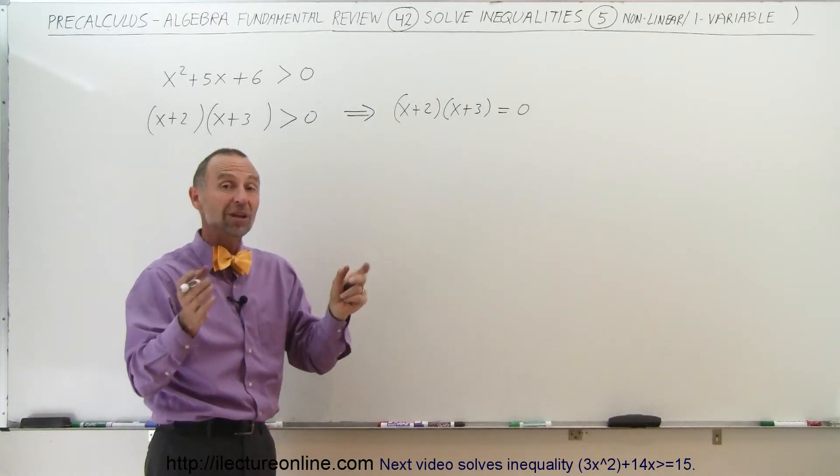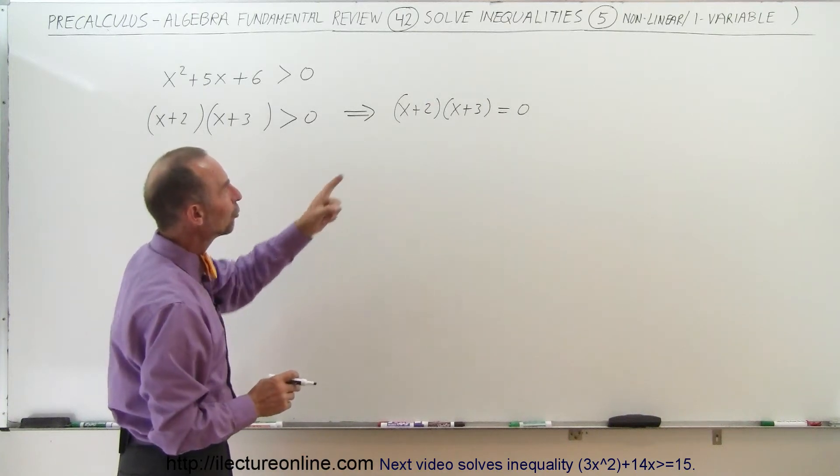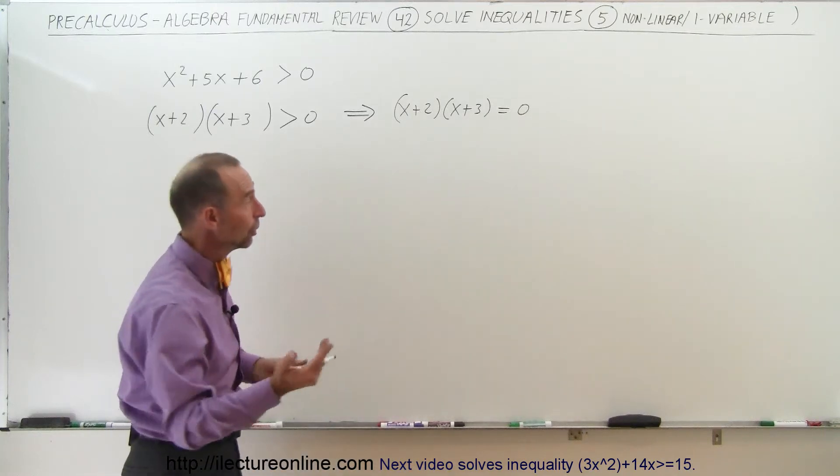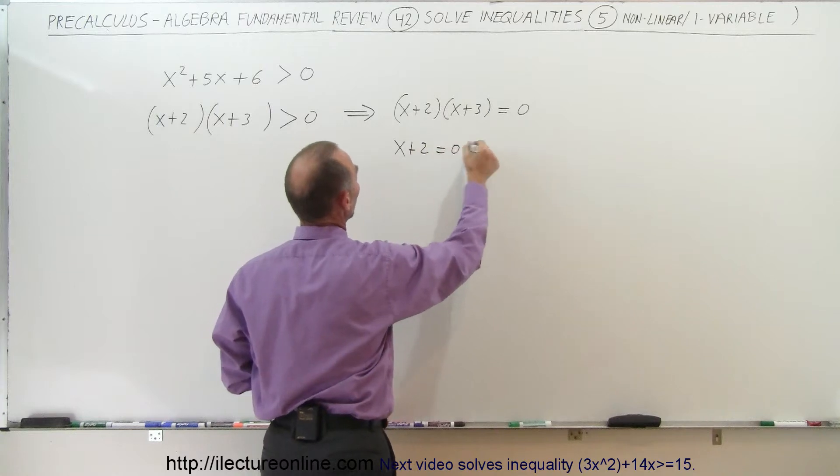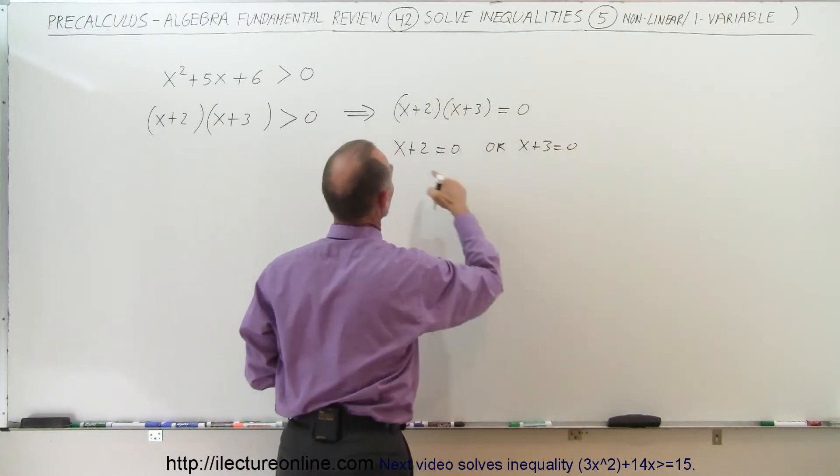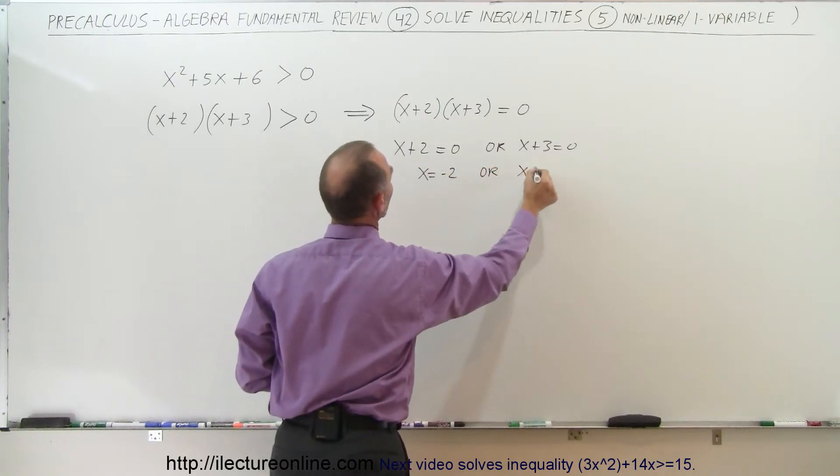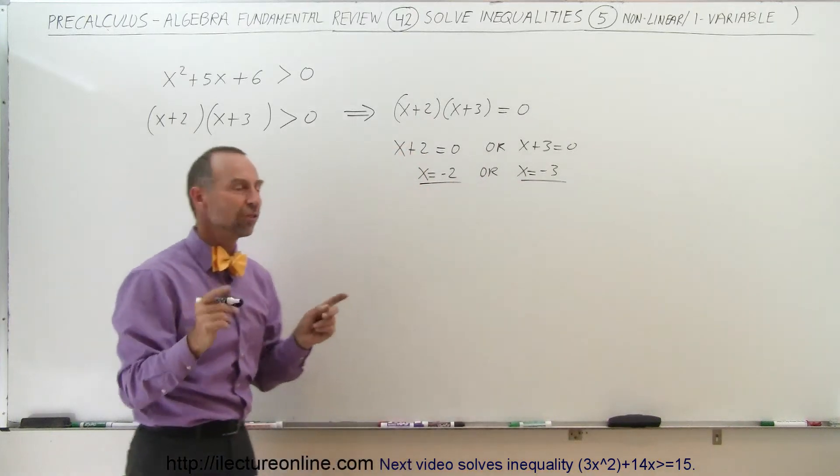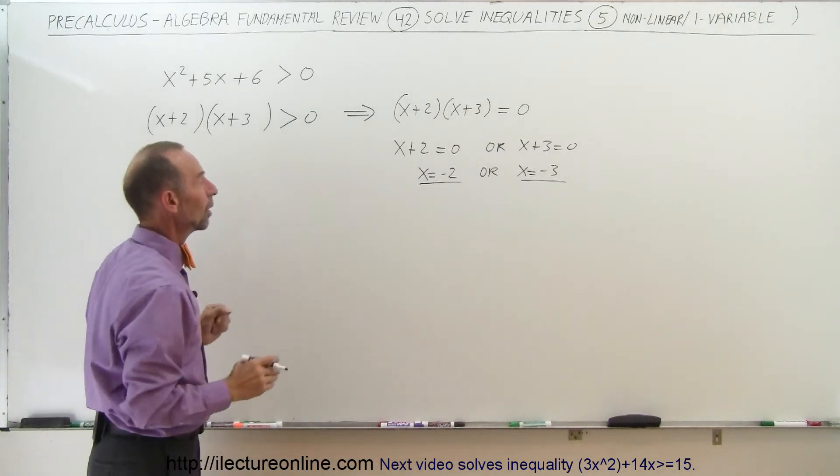And so now what we're going to do is we find the points that satisfy that equation which become the critical points for this inequality. The endpoints of the regions that we're looking for that will satisfy the inequality. So when we have two numbers or two entities multiplied together to get zero, that means either one or the other needs to be equal to zero. That means that x plus 2 equals zero or x plus 3 equals zero, which means that x equals negative 2 or x equals negative 3. Those are the two critical points which gives us the endpoints or limiting values of the regions we're looking for to satisfy this inequality.